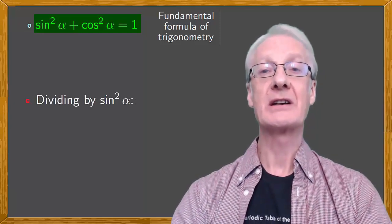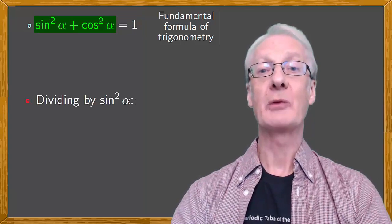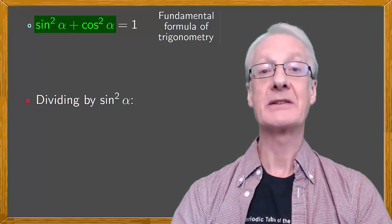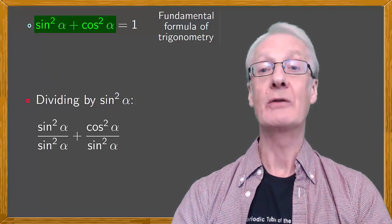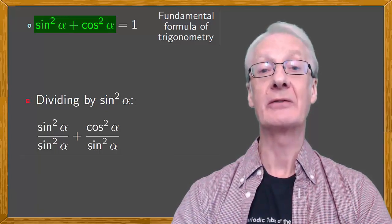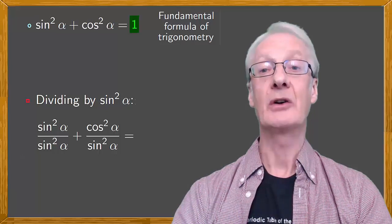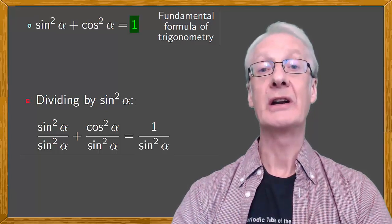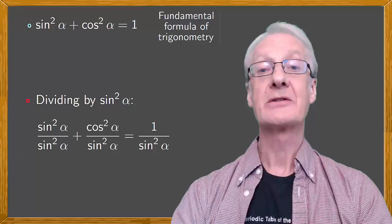First, let's divide by sine squared alpha. On the left, when we divide the two addends by sine squared alpha, we get sine squared alpha over sine squared alpha plus cos squared alpha over sine squared alpha equals, on the right side, 1 divided by sine squared alpha.